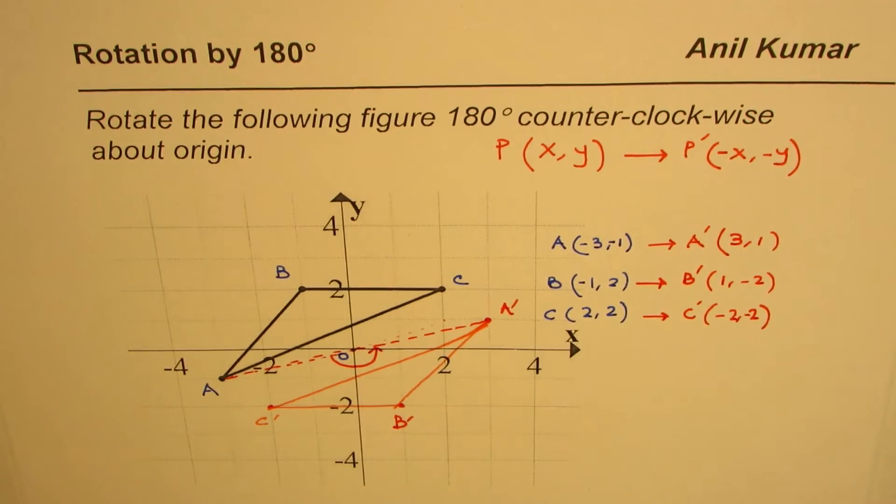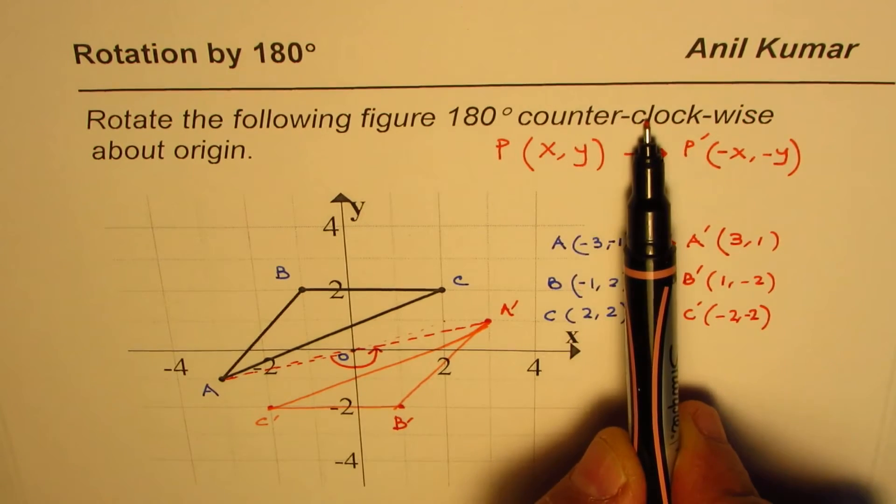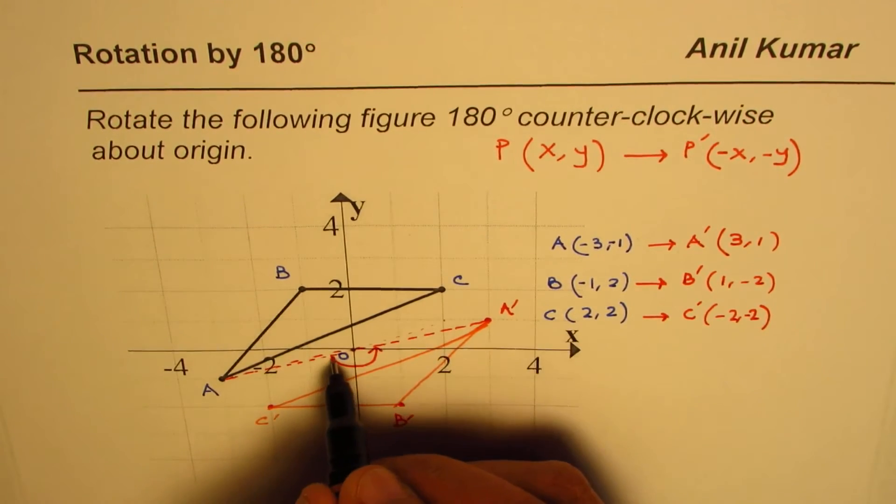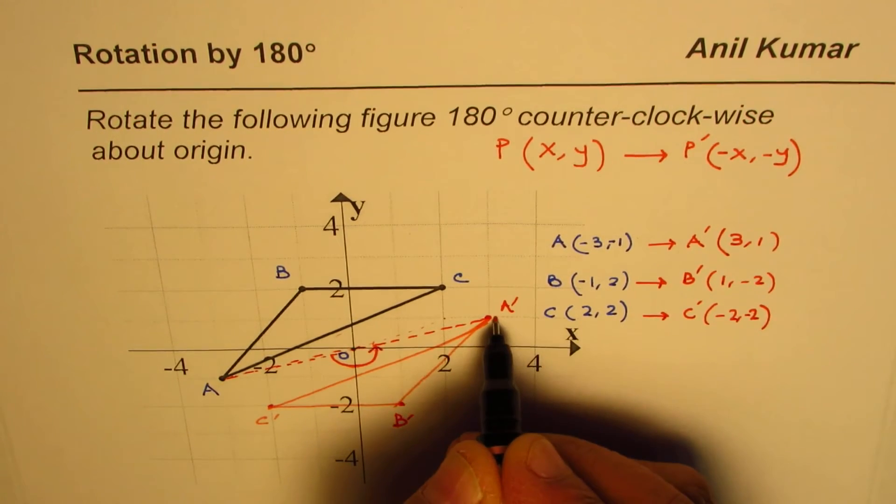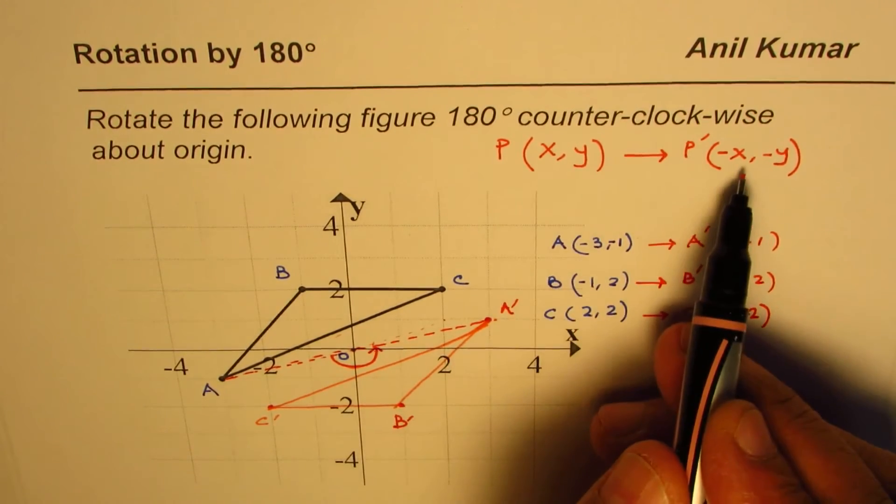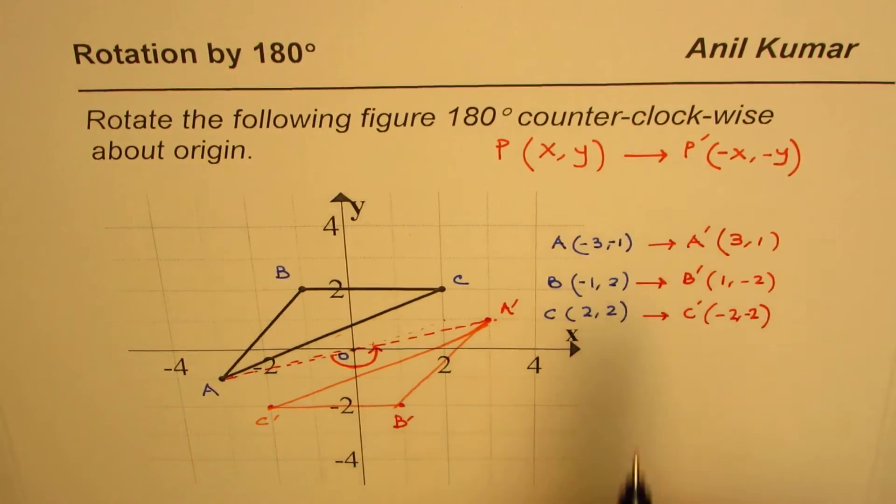Also remember, whether it is counterclockwise or clockwise, it doesn't make a difference. If it is counterclockwise it is like this, clockwise will be like that, but you land at the same place. So in both cases the transformation is that the sign of x and y coordinates will change.